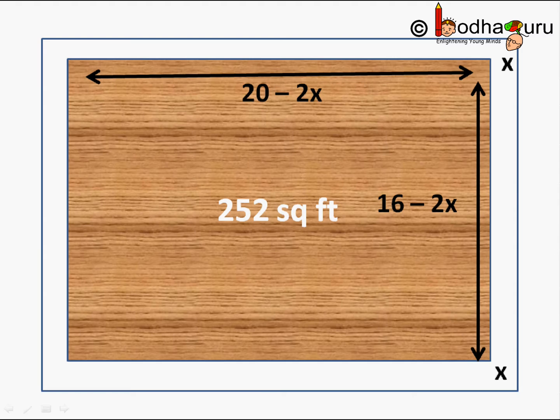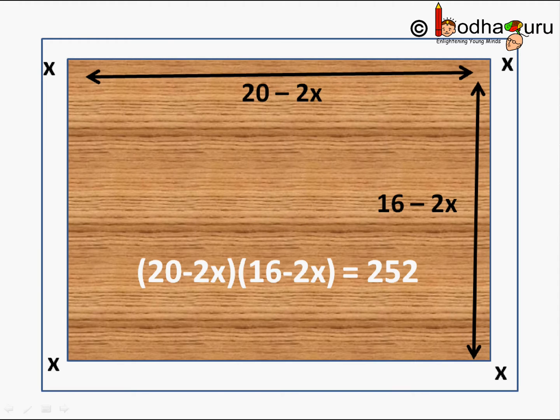Now we know the area of a rectangle equals length times breadth. So the area of his garden after the wall is (20-2x) times (16-2x) and we know it equals 252 square feet. So we got an equation (20-2x)(16-2x) = 252, and if we solve it we can find the value of x, which will be the thickness of the wall.